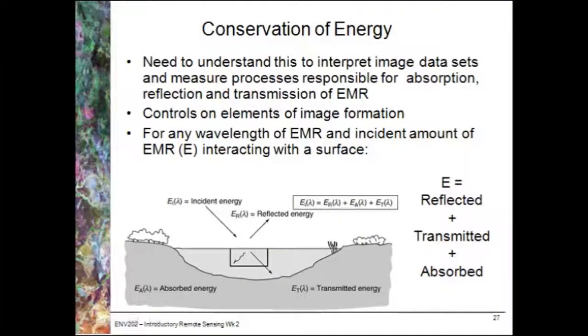So more about electromagnetic radiation and interactions with different features. The first thing that you need to understand is that energy is conserved, and what this is basically meaning is that the total amount of energy has to always equal the sum of that which is reflected, transmitted and absorbed.